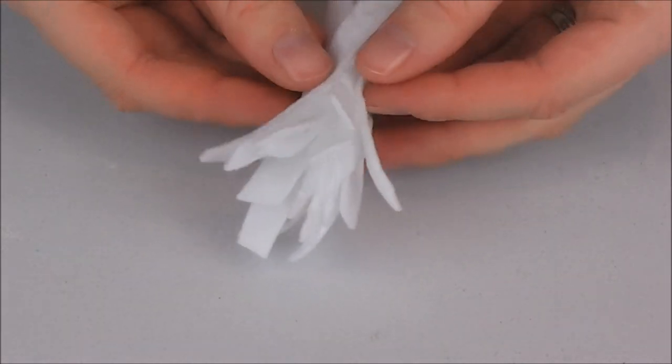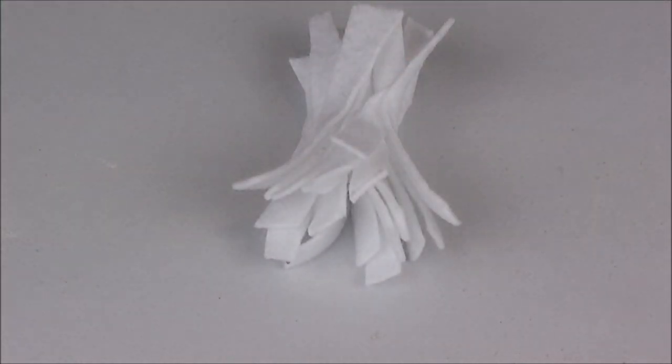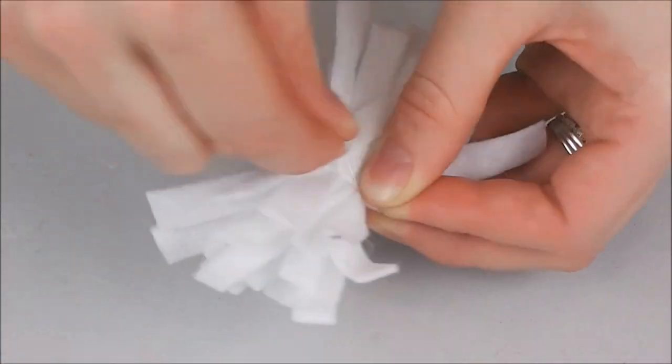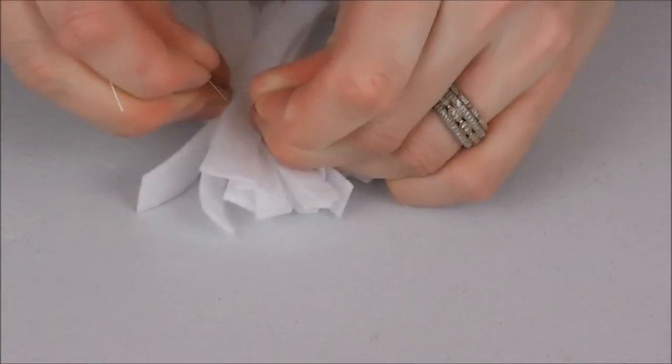With any remaining felt, cut small even strips and tie in the middle using your white thread. Fluff out your newly created pom pom and sew to the tip of each cover.